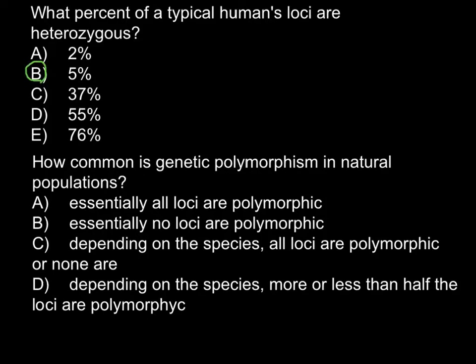Only about 5% of all loci in the human genome are present in the heterozygous form. So 95% of our loci are present in homozygous form. Now for the second question.